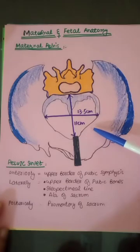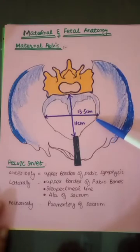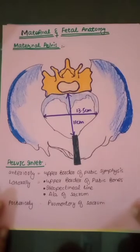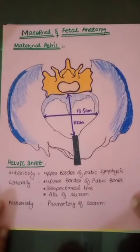Because the transverse diameter is greater at the inlet, the baby during labor enters the pelvis in the transverse position. This is also important for MCQs: which diameter is wider at the pelvic inlet versus the pelvic outlet?